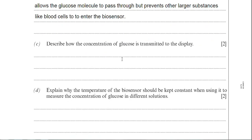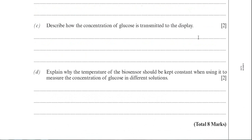Moving on to part C. Describe how the concentration of glucose is transmitted to the display. Again, this is a typical question that comes up for biosensors. A couple of things you can say here is the glucose obviously enters the active site of the immobilized enzyme. That glucose is then broken down into products. The products then are absorbed into the transducer, and the transducer will convert that product, which is a chemical substance, into an electrical signal.